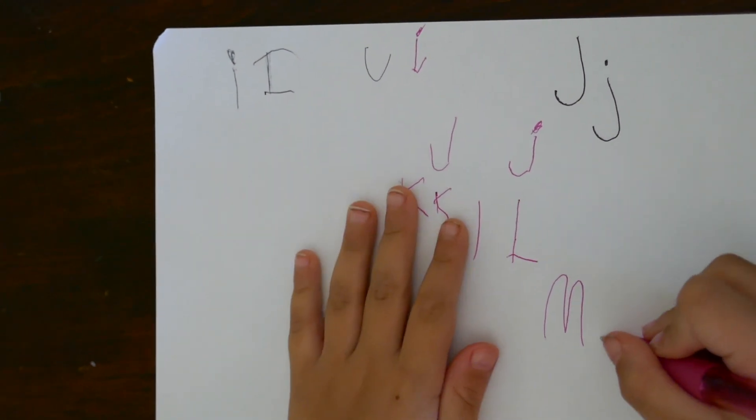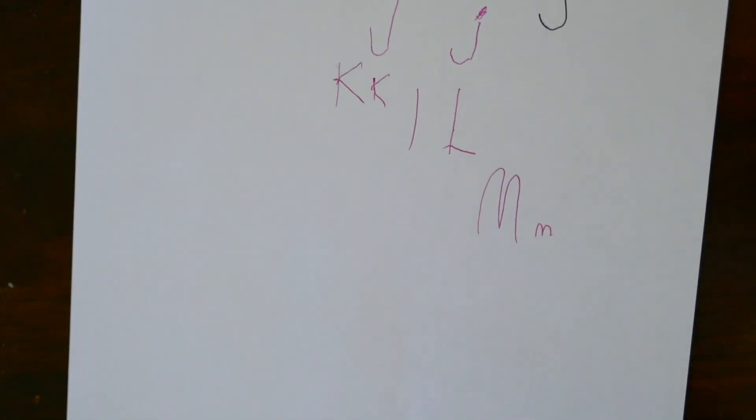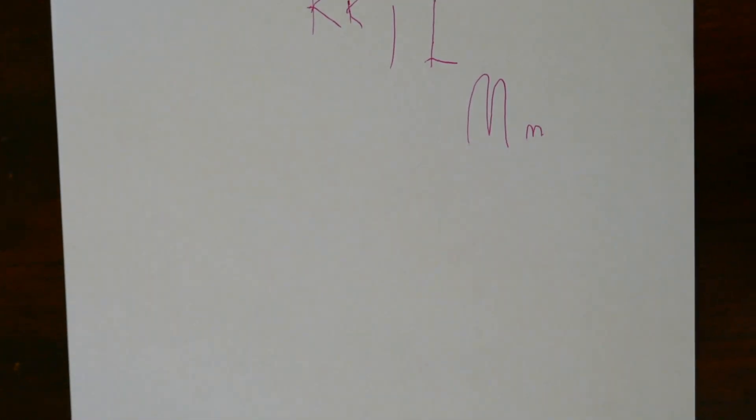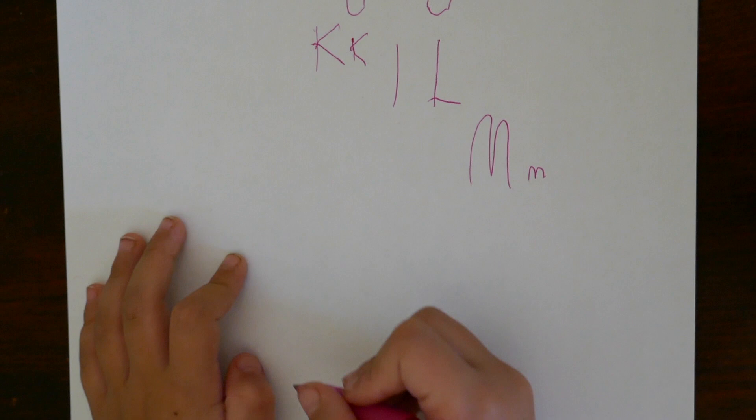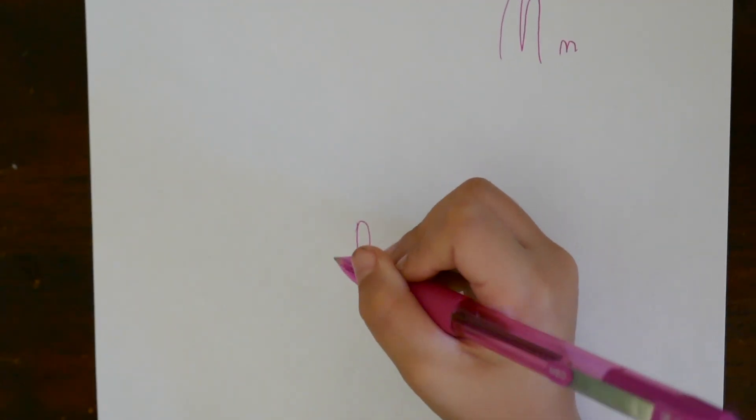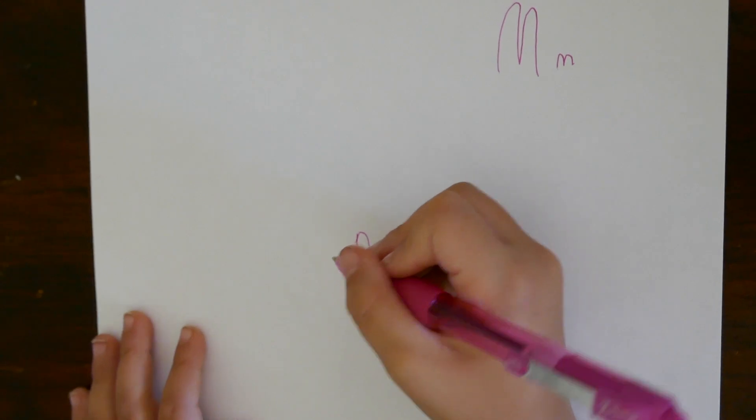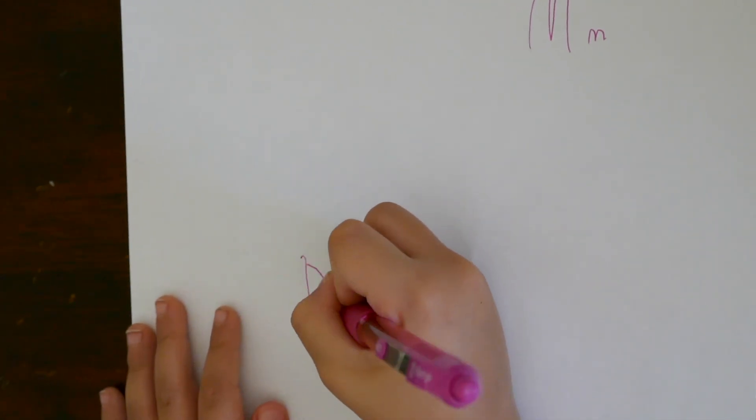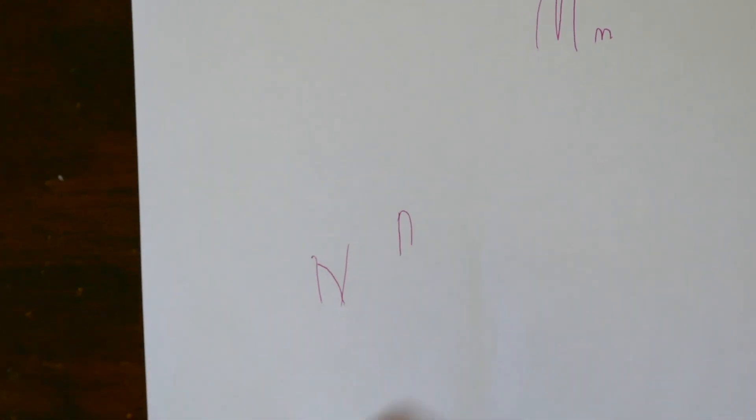And how about a lowercase? Good. And how about an N? N. Remember, it's only one hump. And that's a lowercase. And then how about an uppercase N? And then one line check. Very good.